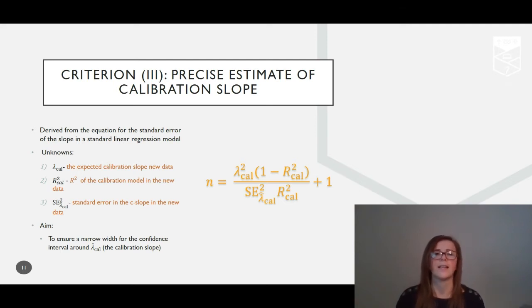Often on external validation, the calibration slope is actually less than one due to overfitting during model development. Lowering the assumed values of calibration slope in this case would reduce the required sample size; therefore, an assumed slope of one is actually the most conservative.